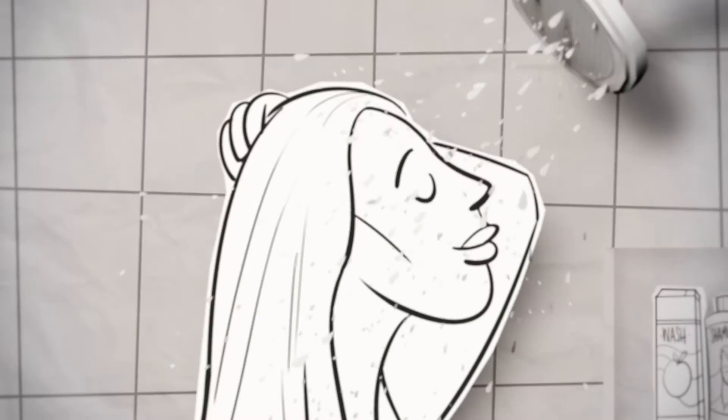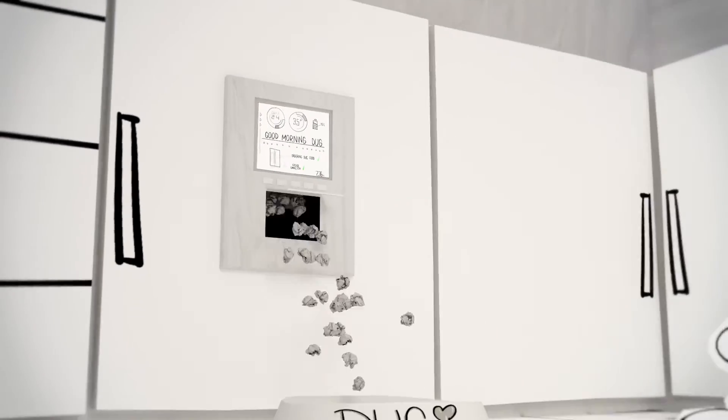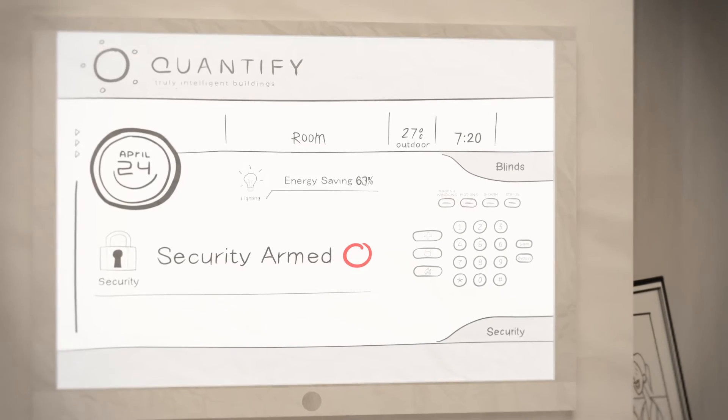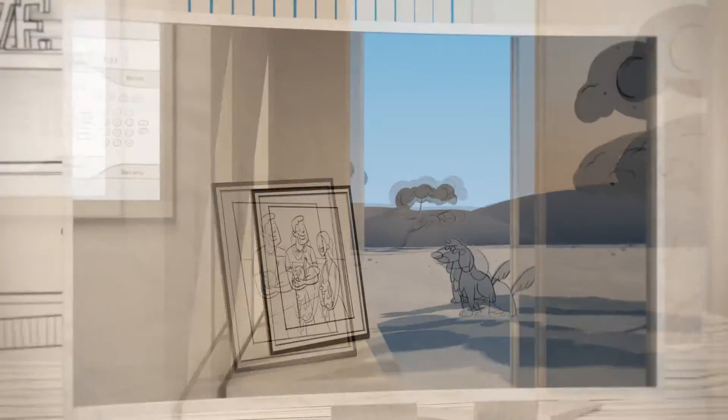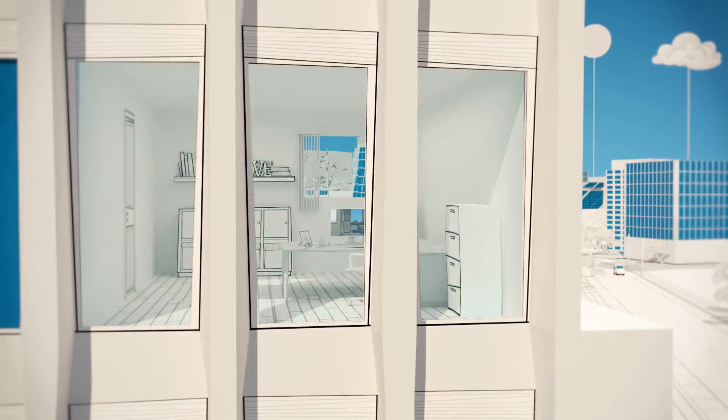In our world, devices sense their environment and proactively respond to the data collected. Devices that can not only see their surroundings but actually taste, smell and feel. Now imagine the possibilities of those devices working in unison to control a room in a house - the light, temperature, air quality and security.